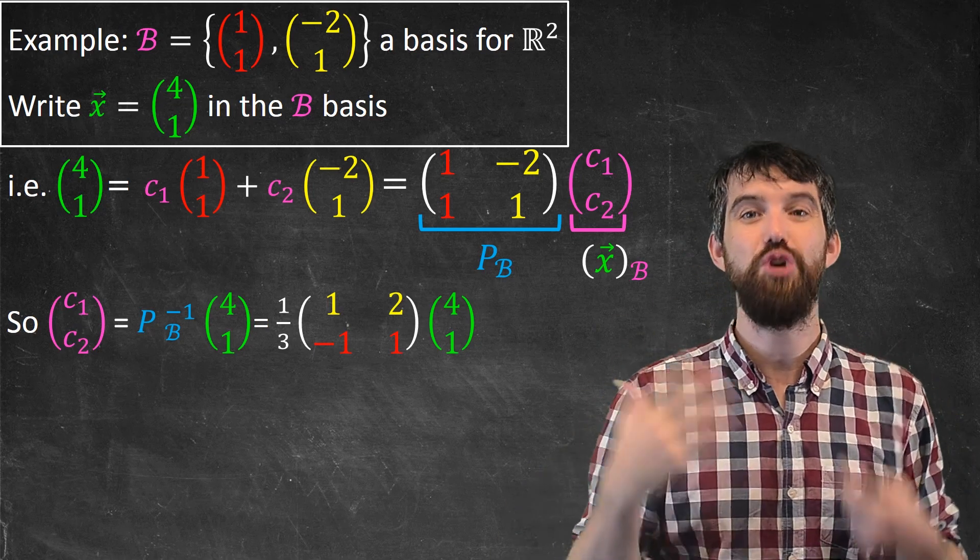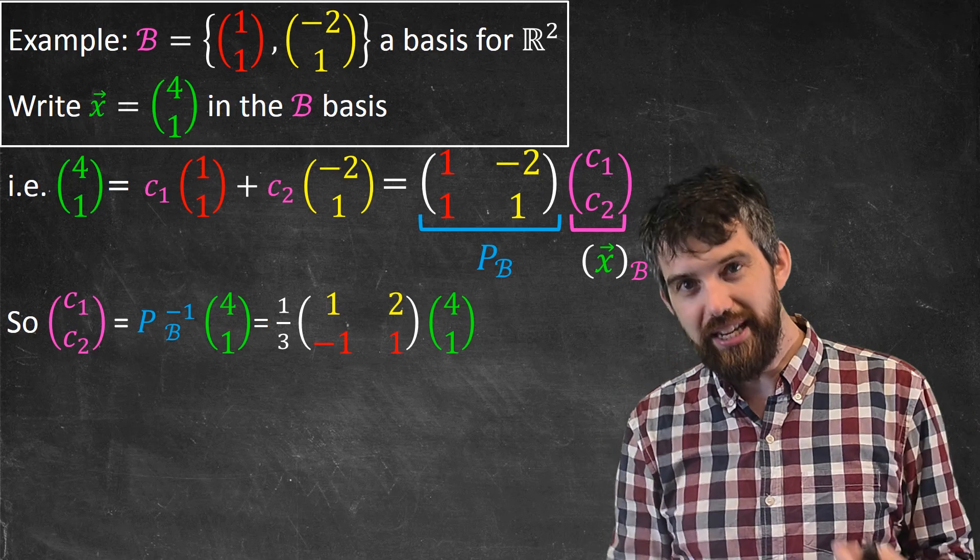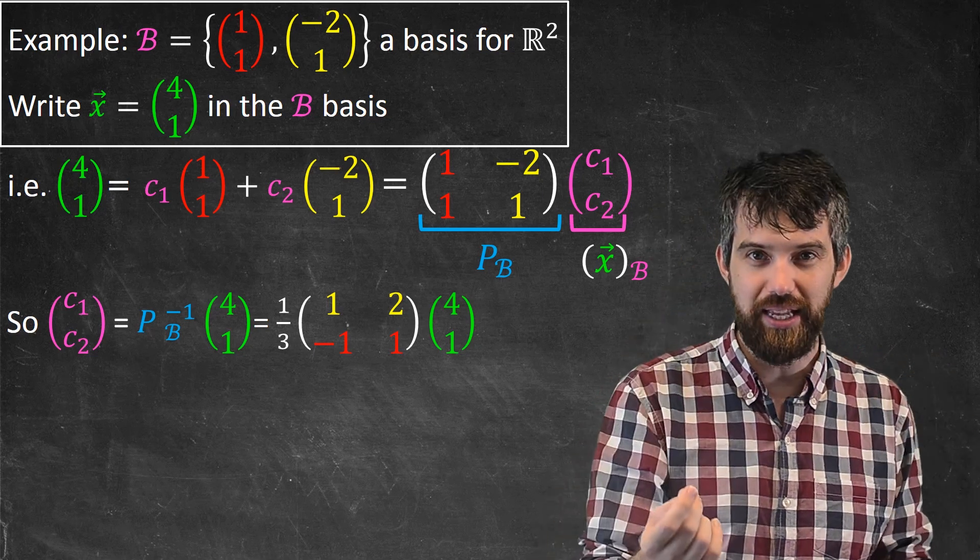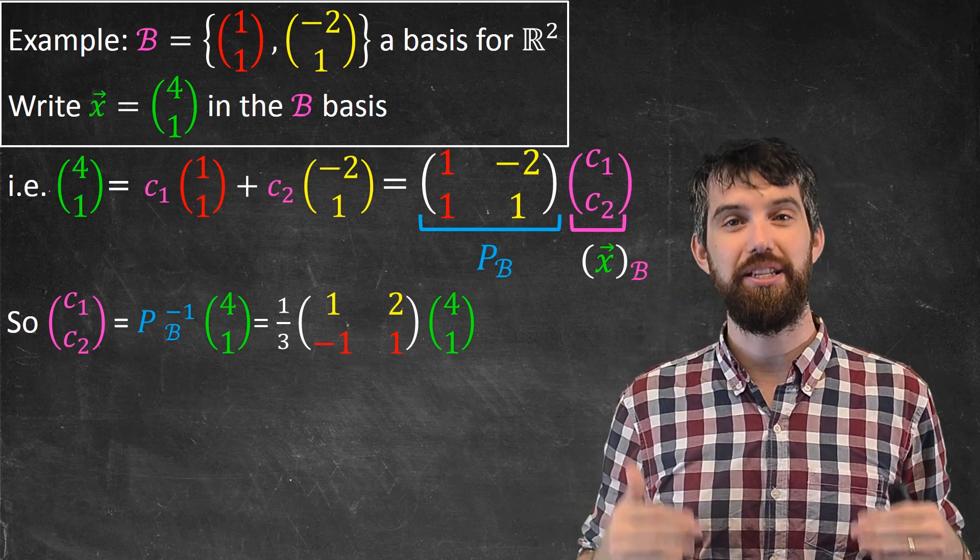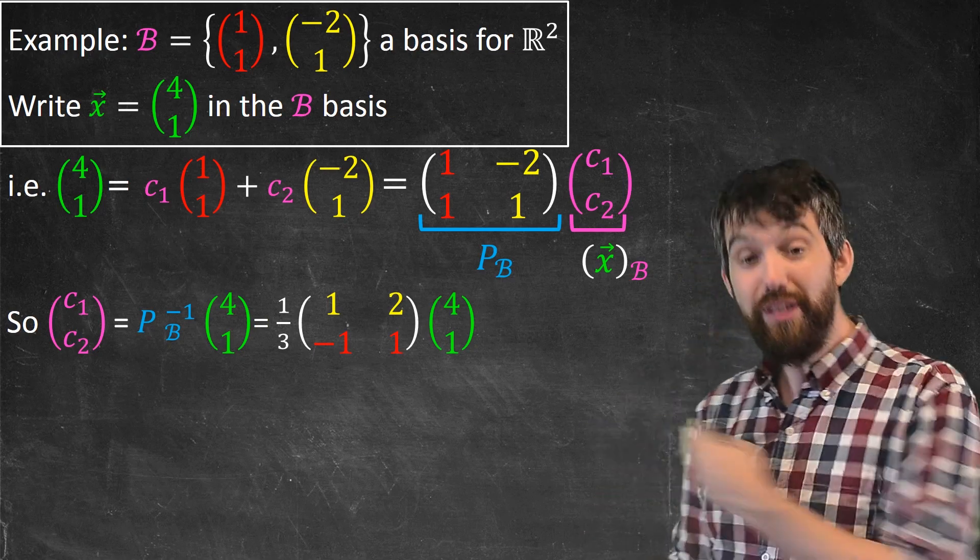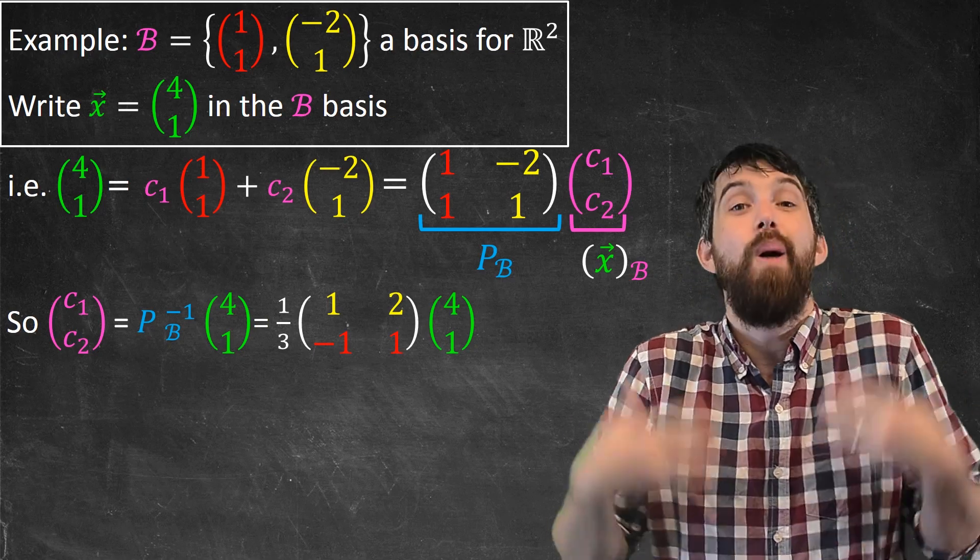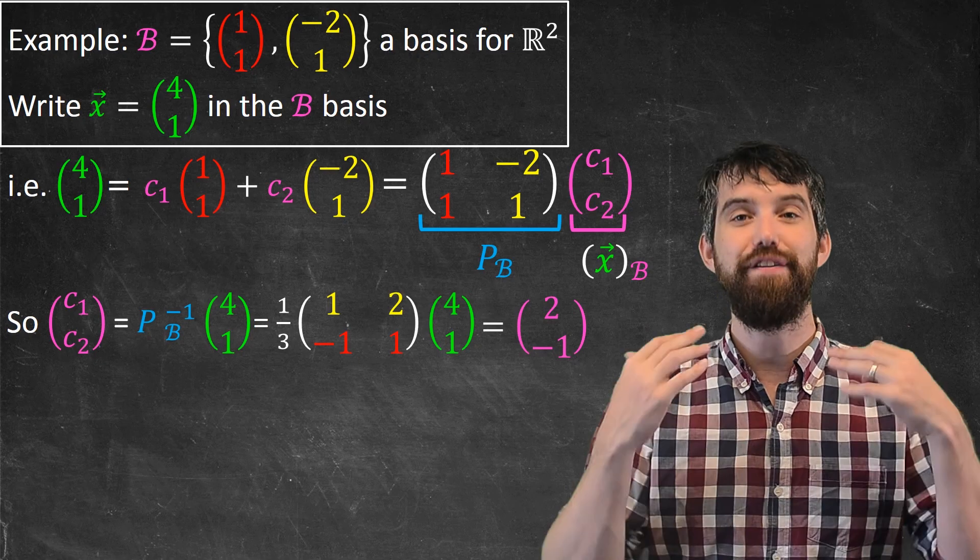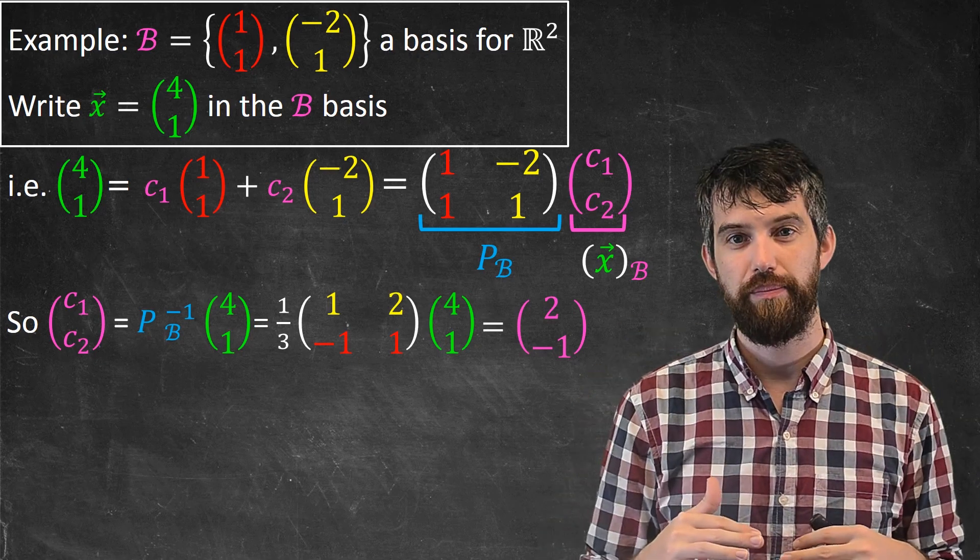And I know how to take the inverse of a 2 by 2 matrix. You swap the a and the d, you put a minus sign in front of the b and the c, you divide out by ad minus bc. So I've inverted this particular matrix, and now I can just multiply it out, and what do I get? I get the value (2, -1).